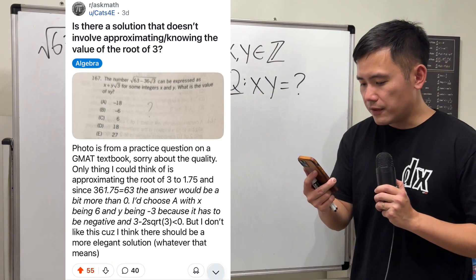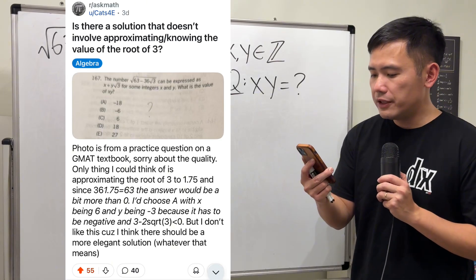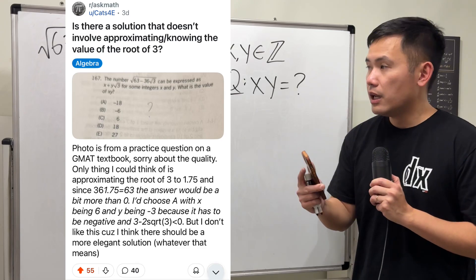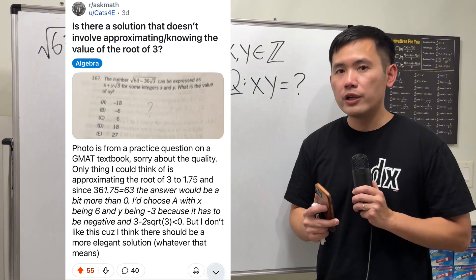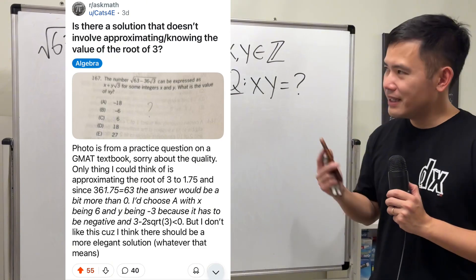Is there a solution that does not involve approximating or knowing the value of square root of 3? This question is a practice question on a GMAT textbook. Let's have a look.